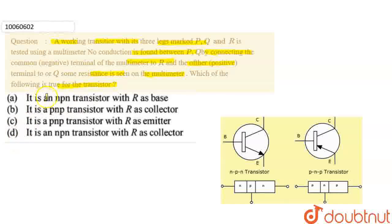The options given are: it is an NPN transistor with R as base and R as collector; a PNP transistor with R as base; R as emitter; or it is an NPN transistor with R as a collector.